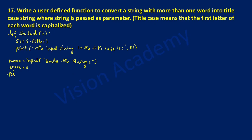Next we'll iterate through the entire string using a for loop: for b in name, then put a colon. With indentation we check the condition if b.isspace(). This function returns a boolean value, either true or false. If there is a space it returns true, and in that situation space += 1, incrementing its value by 1.